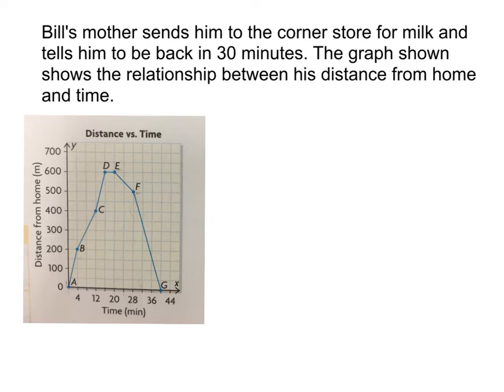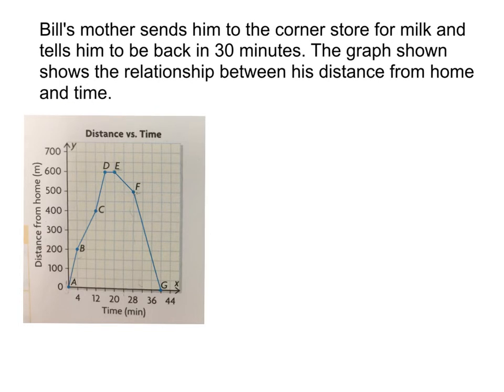Bill's mother sends him to the corner store for milk and tells him to be back in 30 minutes. The graph shows the relationship between distance from his home and time. It's showing us his trip. He's starting from home, going to the corner store to grab milk, and then going back home. So we want to describe each section of the graph and what it means in terms of his trip.